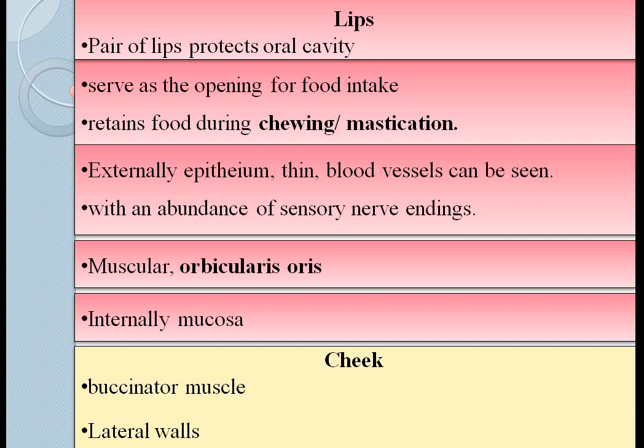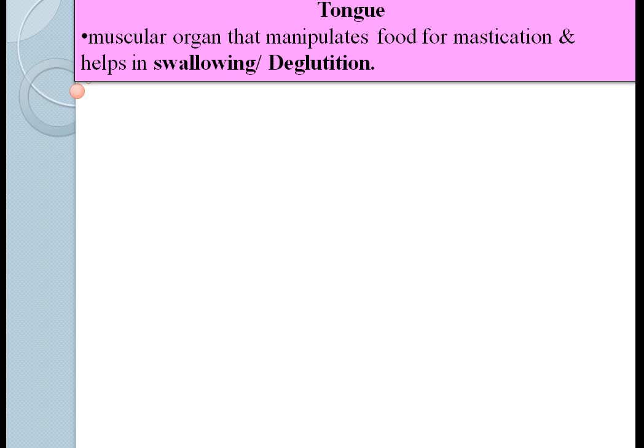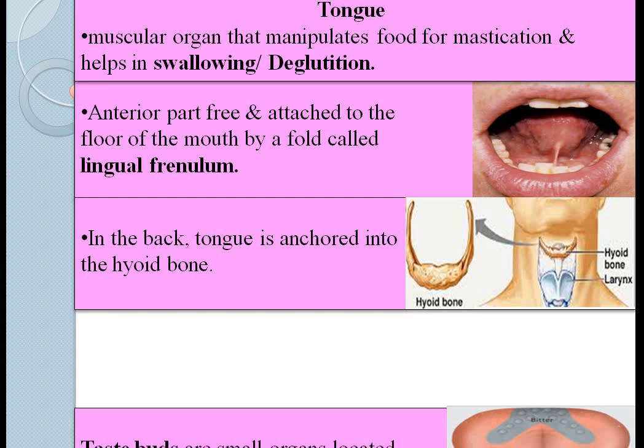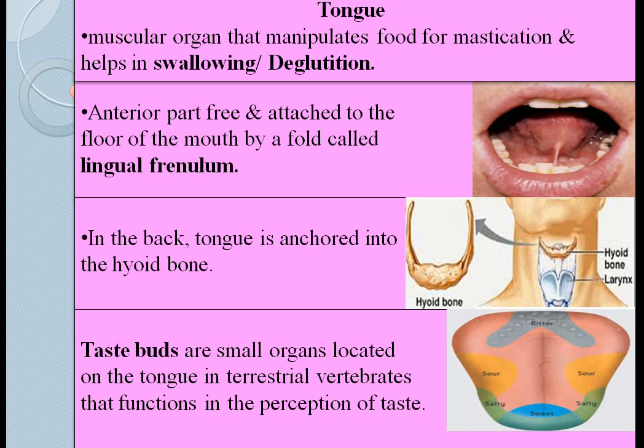The tongue is a muscular organ that manipulates food for mastication and helps in swallowing, which is also called deglutition. The anterior part of the tongue is free and is attached to the floor of the mouth by a fold called the lingual frenulum. In the back, the tongue is anchored to the hyoid bone. The tongue also has taste buds — small organs located on the tongue in all terrestrial vertebrates that function in the perception of taste, enabling us to detect whether food is sweet, sour, salty or bitter.